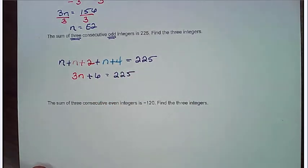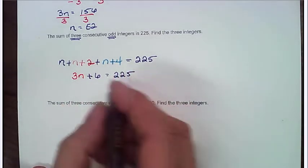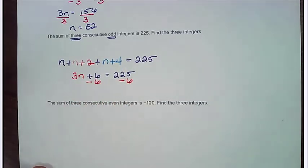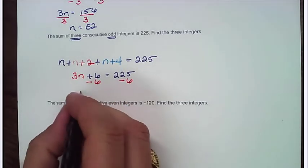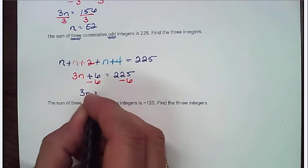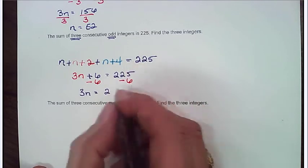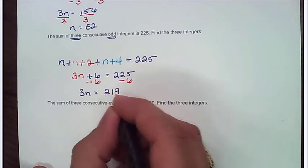Now, solving that linear equation, I need to subtract 6 from both sides. Well, that's going to give me that 3n is equal to 219.